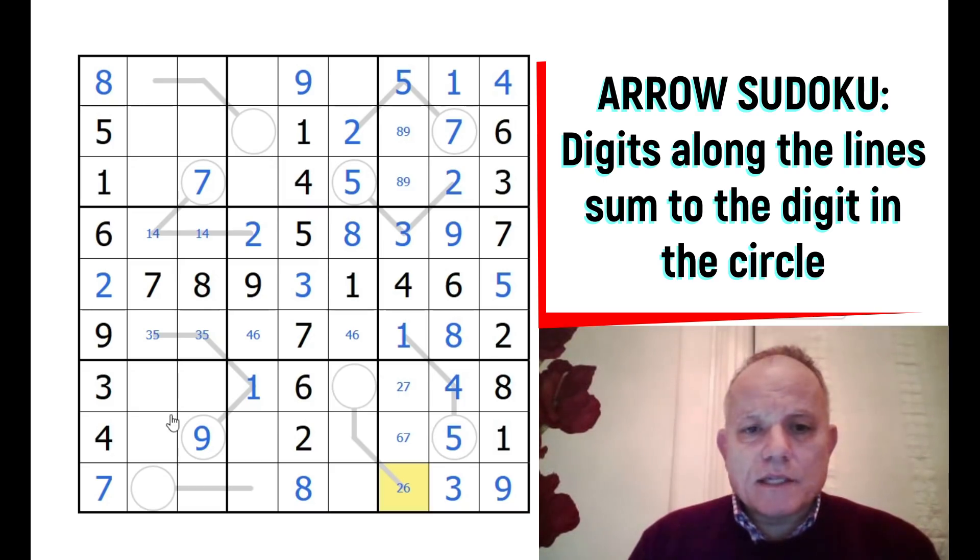This has to be 9 because of that 9 and that 9. I can put the 9 in there. This has to become 6. That resolves the 2 and the 7. Now 4 and 5 in this box have to be down here because of this 5 and this 4.